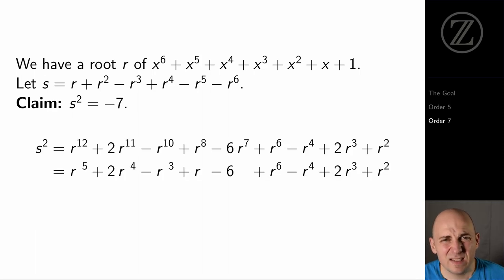So squaring s is quite a bit of work, but it's the sort of algebra that we can do. And when we square s, we get r to the 12th plus 2r to the 11th minus r to the 10th plus r to the 8th minus 6r to the 7th plus r to the 6th minus r to the 4th plus 2r cubed plus r squared.